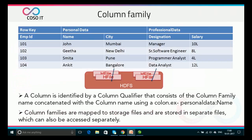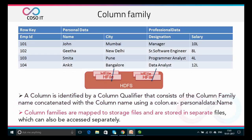For column families, the row key acts as a primary key. We have personal data and professional data as column families, with columns name, city, designation, and salary. A column is identified by a column qualifier that consists of the column family name concatenated with the column name using a colon — for example, 'personal_data:name' to access the name column. Column families are mapped to storage files and stored in separate files which can also be accessed separately.